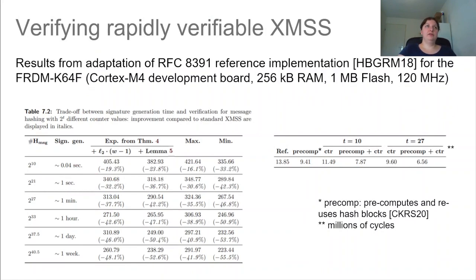Then lastly, we verified the performance of our rapidly verifiable XMSS version. And these results come from an adaptation we made of the reference implementation, which we ran on the Freedom K64 boards. This is a Cortex M4 development board, which gave us the following results. Namely here on the left, we see a table with the tradeoff between the signature generation time and the verification time by adding the counters.